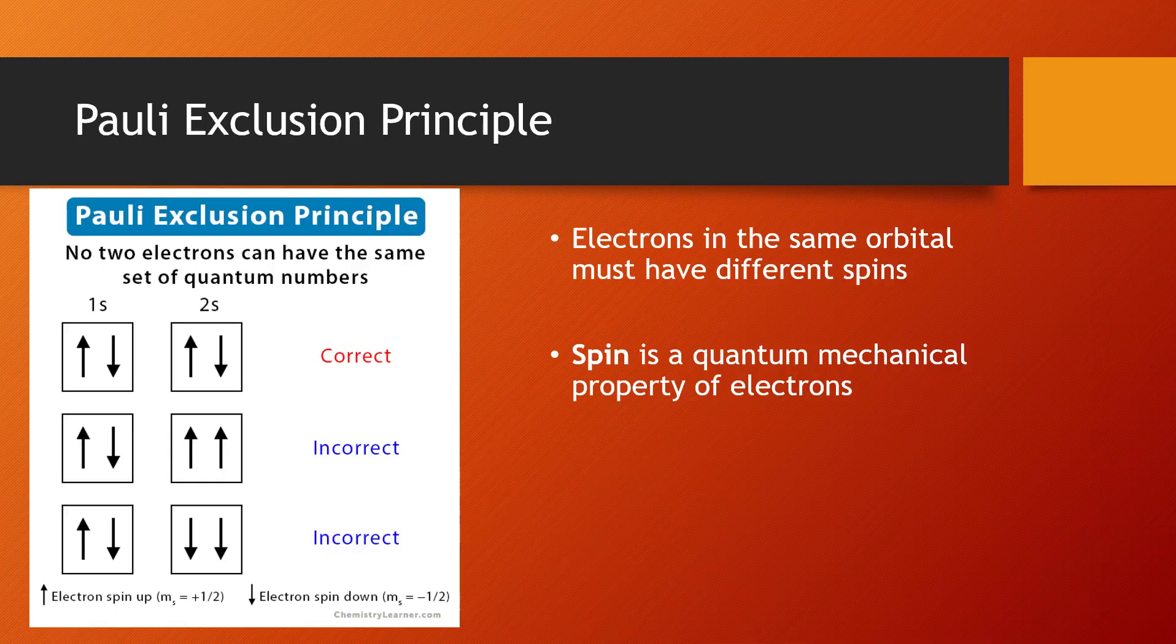The Pauli exclusion principle is a little simpler. Electrons in the same orbital must have different spins. So if you are in the 1s orbital, then you have to have one going up and one going down.